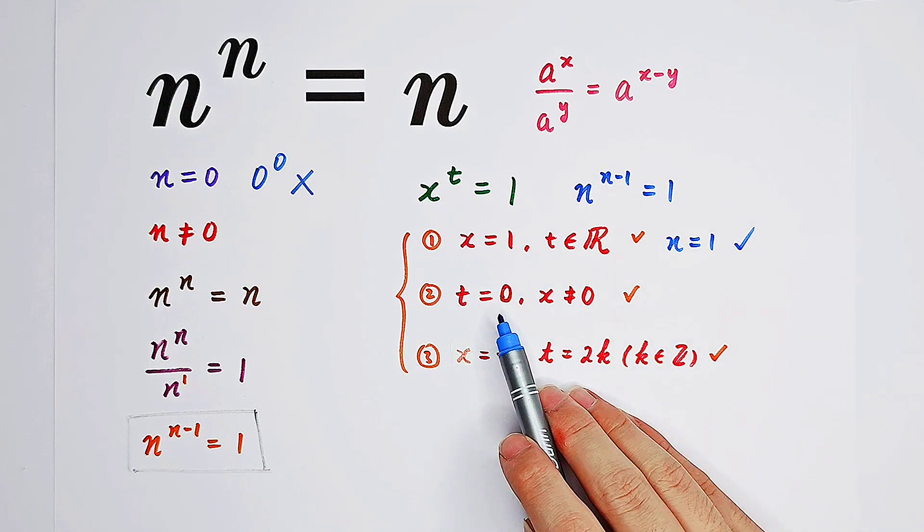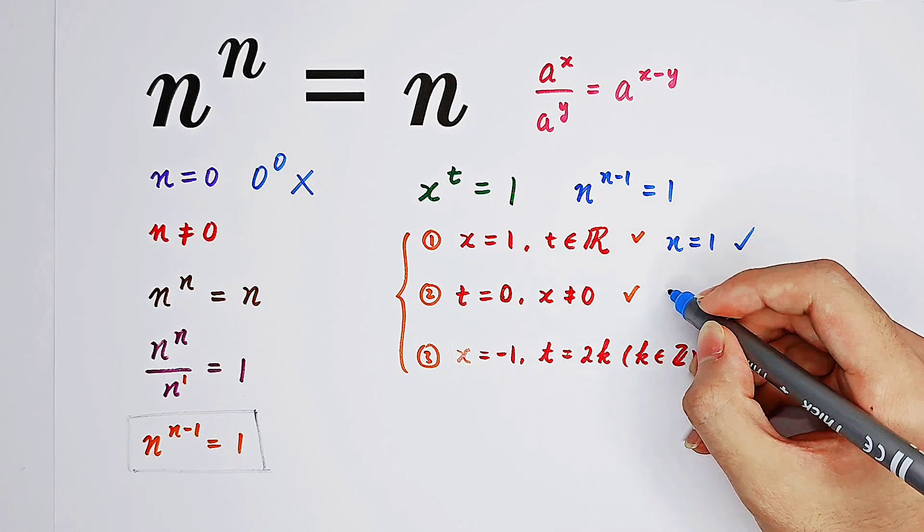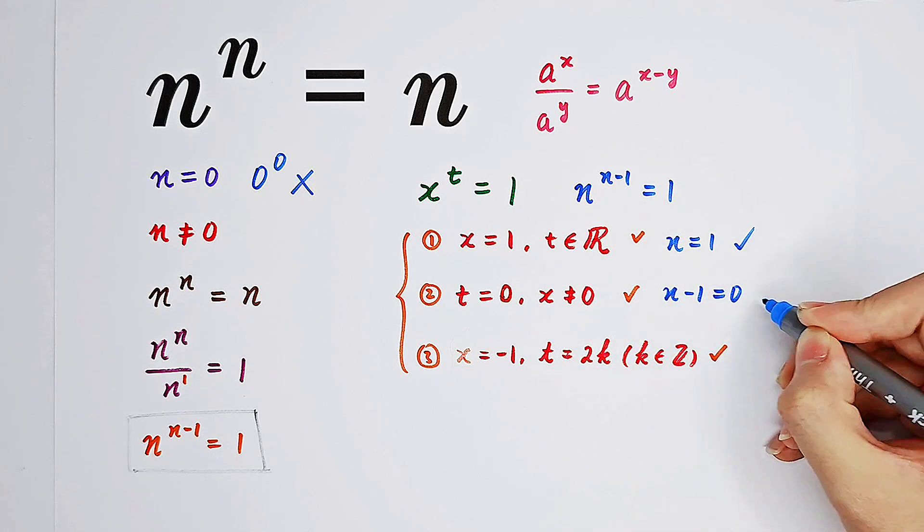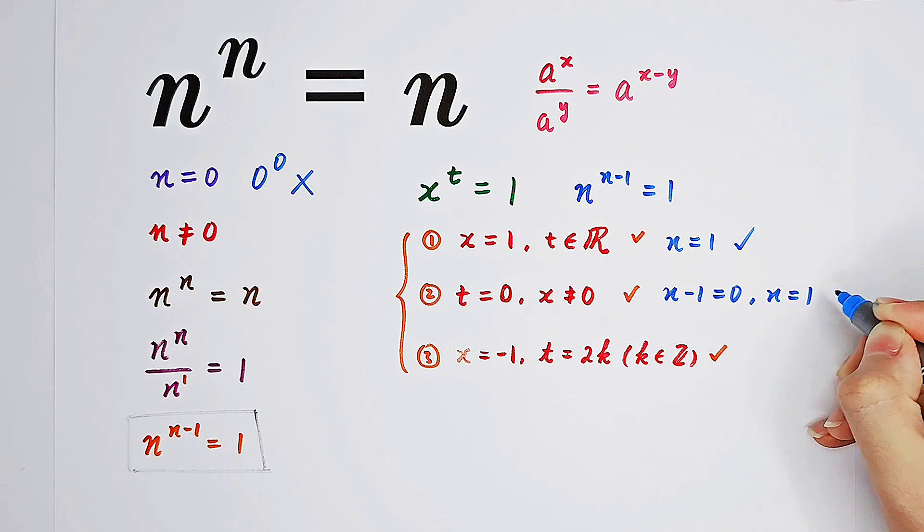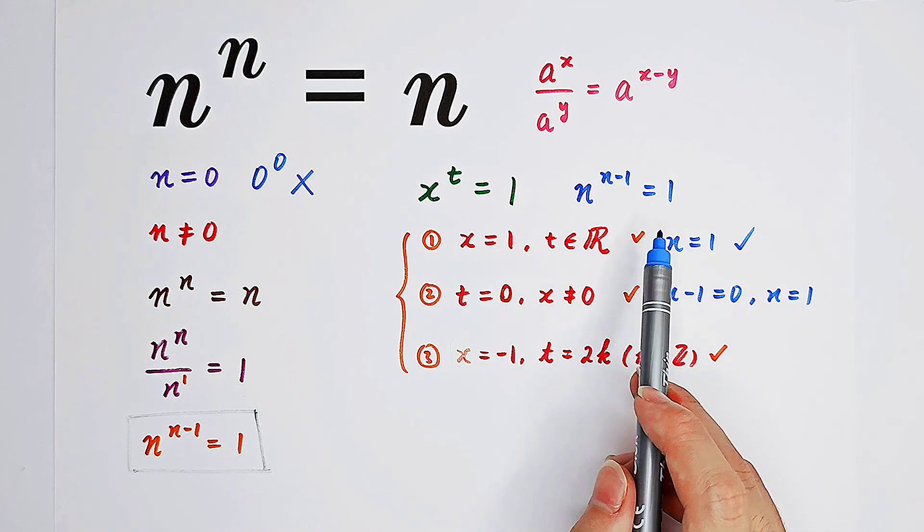t equals 0, that means the exponent equals 0, and n minus 1 equals 0. So n equals 1. So it'll be 1 to the power of 0 equals 1, which also holds.